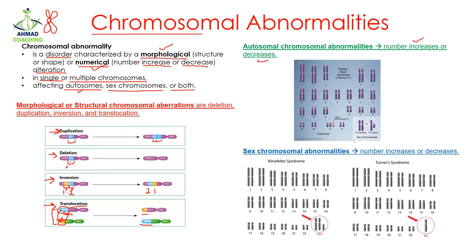In the case of Down syndrome, we see that the 21st chromosome is extra — everywhere it should be two chromosomes, but in Down syndrome there is one extra 21st chromosome. Because of this chromosomal abnormality, Down syndrome occurs.